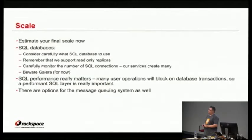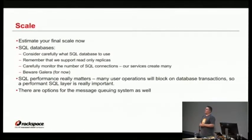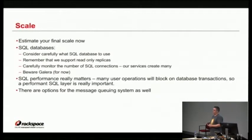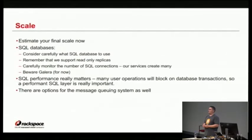There are also options for different message queuing. The way Nova components talk to each other is via a message queuing system, which is not exposed to end users but is exposed to some other OpenStack services. The choices are RabbitMQ, ZeroMQ, and Qpid. The vast majority of deployments use RabbitMQ. If you want to use something different for a good reason, go ask the operator's mailing list if other people have experiences with that before you do it.